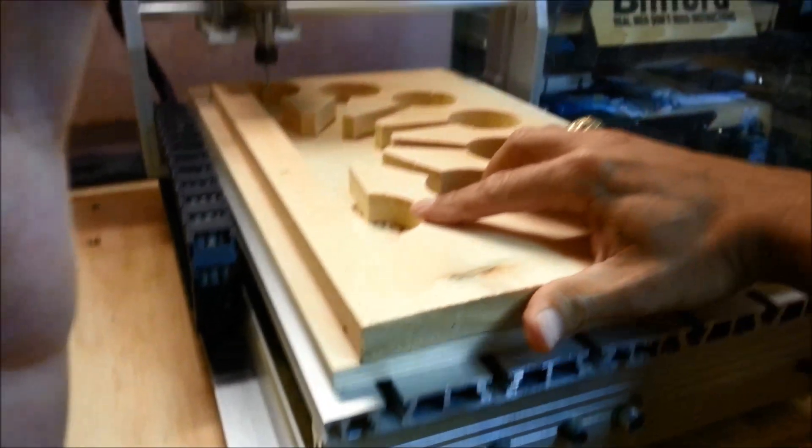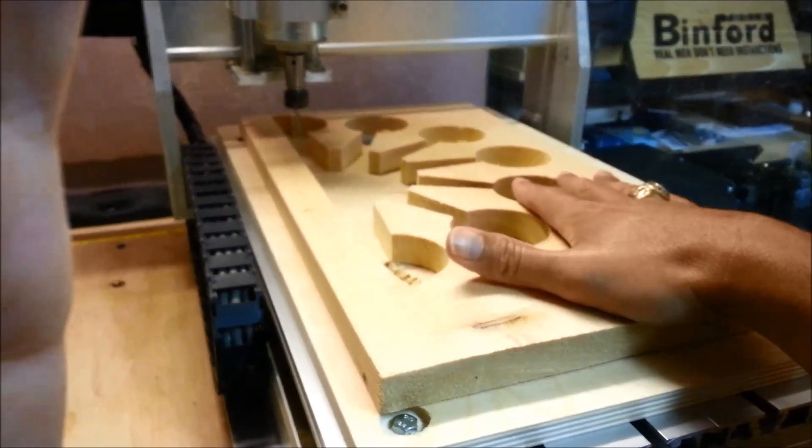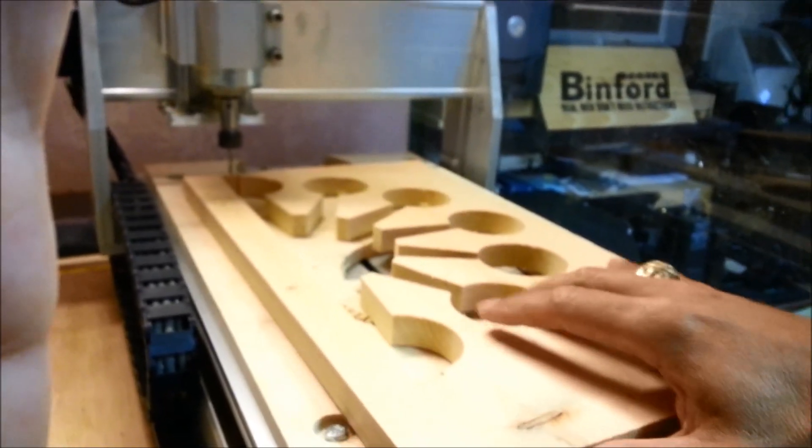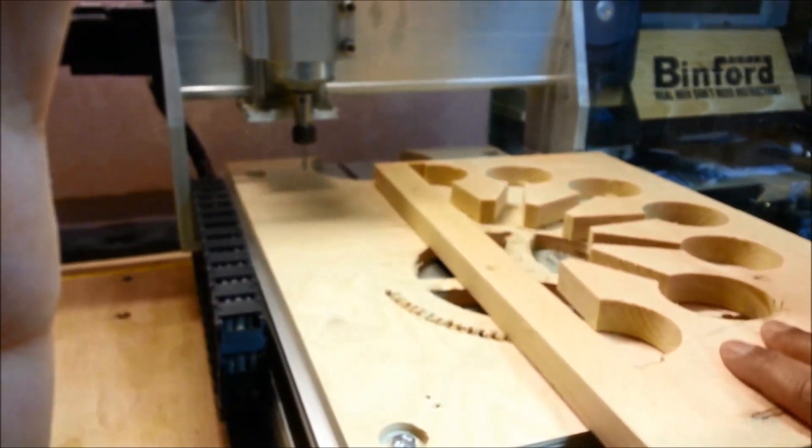Then for anything that's being cut, just run a couple screws through it, screw it down, do our cutting, and then take it off. When this gets worn out, we'll just replace it with something else.